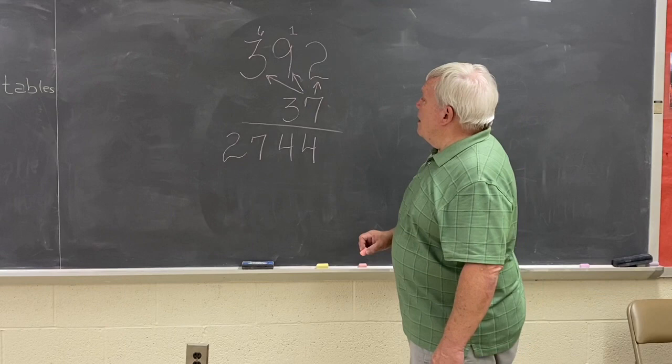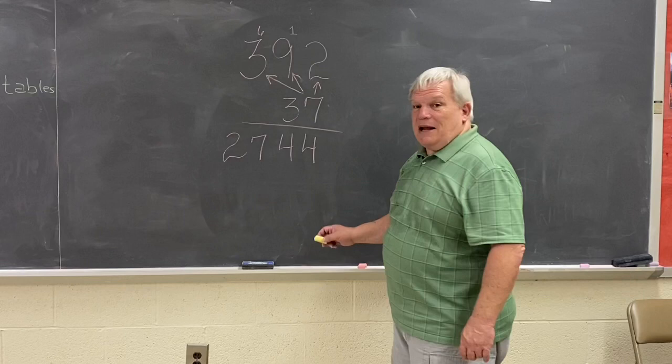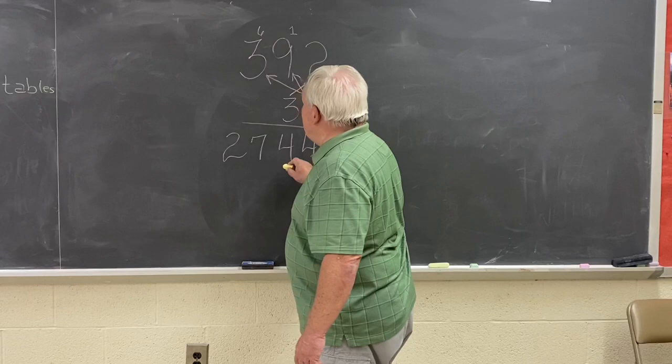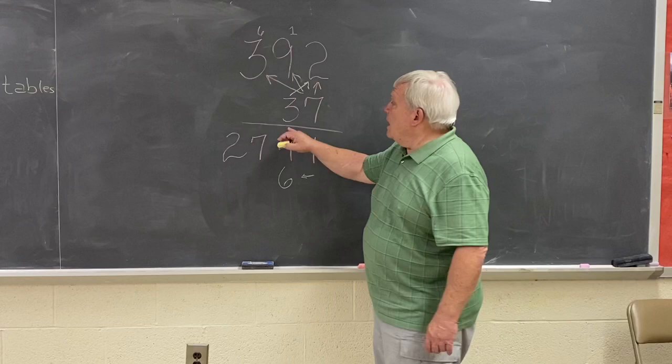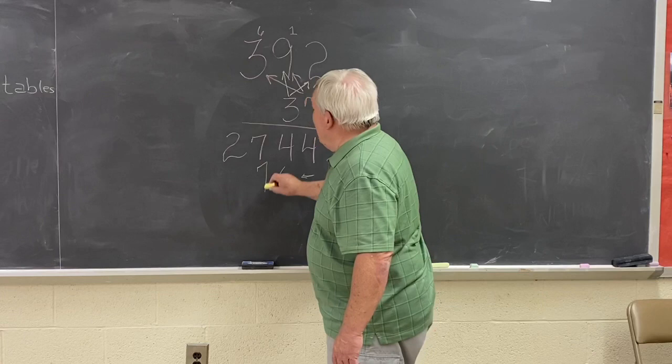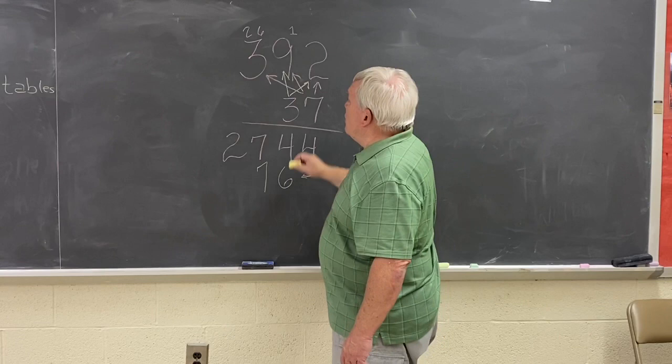Everyone okay so far? Then I go to my digit that's in my tens column in my bottom number and I multiply 3 times 2 and I get 6. Remember to indent because now we're in the tens column. We're no longer in the ones place. So I have to move my digit over one number to the left. Then I multiply 3 times 9 and I get 27 and I carry my 2. Then I multiply 3 times 3 and I get 9 and I add my 2 and I get 11.